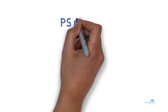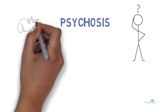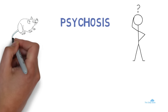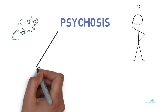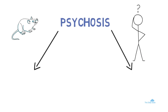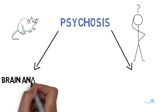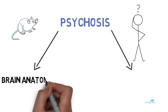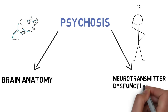So what causes psychosis? We're not entirely sure. It's hard to notice or test the symptoms of psychosis in animals or rats. It seems like psychotic symptoms are unique to humans. However, we do know the following two factors contribute to psychotic symptoms: point one, the anatomy of the schizophrenic brain is different, and two, neurotransmitter dysfunction in the brain.